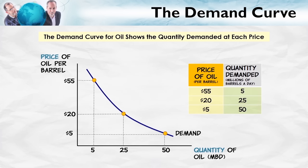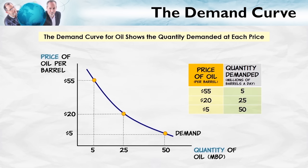We can now graph our three points and connect them with a line — that's the demand curve for oil. The demand curve shows us the quantity demanded at each price. At $55 per barrel, the quantity demanded is 5 million barrels a day. At $20 per barrel, it would be 25 million barrels per day. At $5 per barrel, 50 million barrels per day. A key point is that the demand curve slopes downwards — at a lower price, the quantity demanded is greater. When the price of something falls, people want more of it, and we'll say a little more about that shortly.